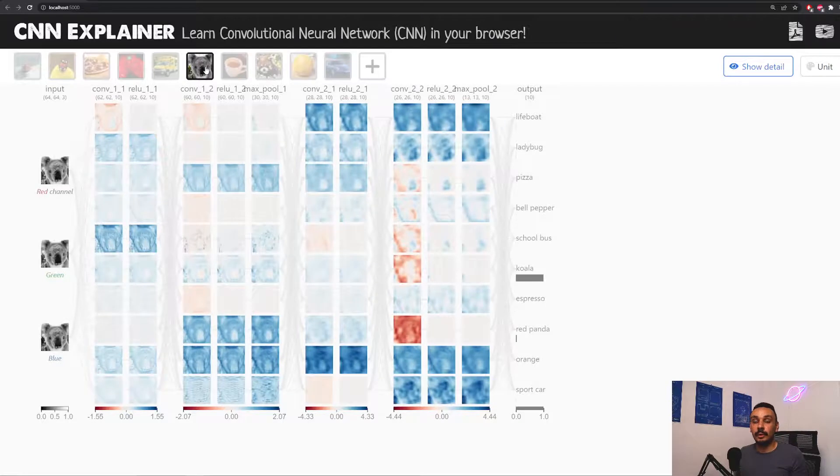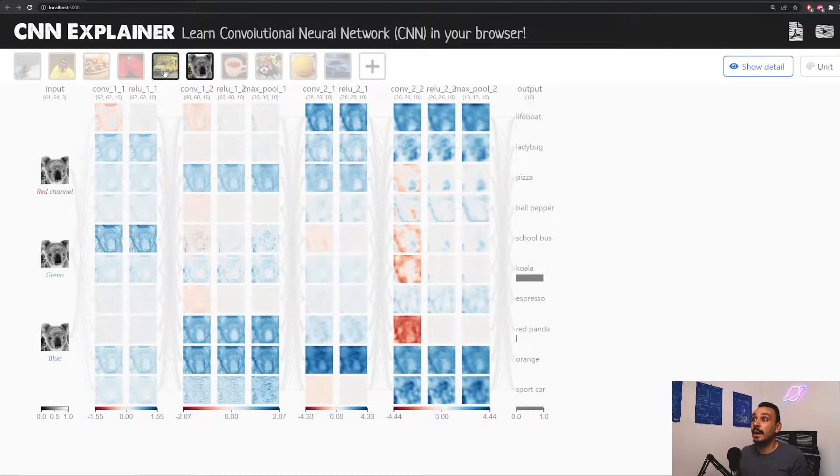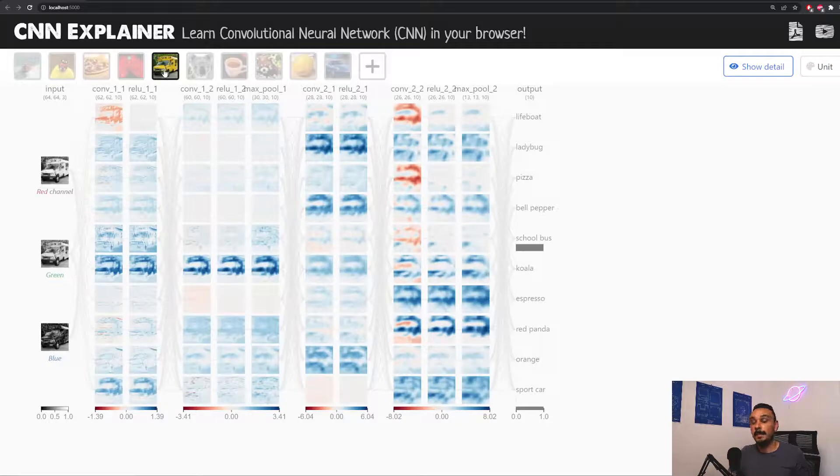When we change the photo that we're working with, we will see that the convolutional layers and the pooling layers will have different effects on each photo, and that's what you will see over here. And those effects are what helps the CNN make a decision about the class of the image that we're working with. So now we know that the two building blocks of a CNN and computer vision in general are the convolutional layers and the pooling layers. Let's see how we can code those.